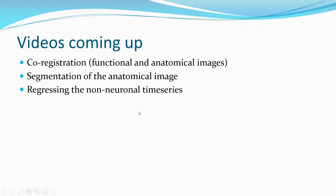So that was the main content of this video. Now we know why we need to do co-registration: first we align the functional and anatomical images because segmentation of the anatomical image is easier and the functional image is very difficult to segment. Then you segment the anatomical image and regress the non-neuronal time series extracted from segmentation. In the next video, we'll see how we can actually do co-registration, segmentation, and regression. That's all for this video — thank you so much for watching.